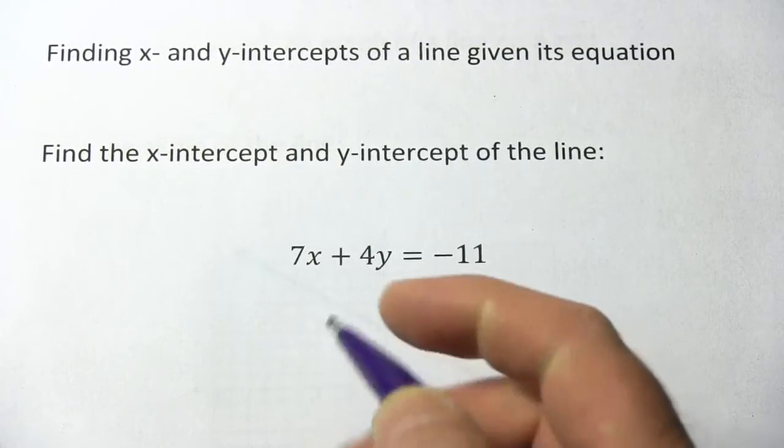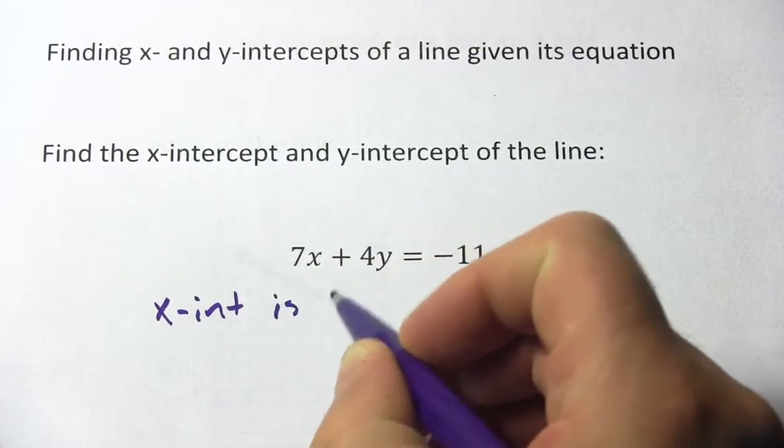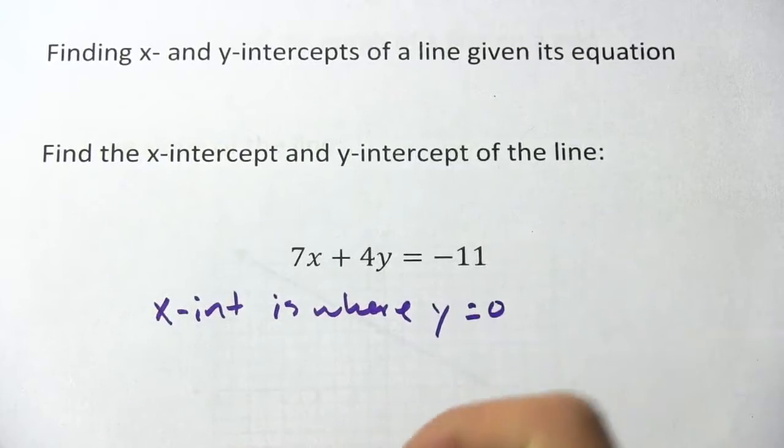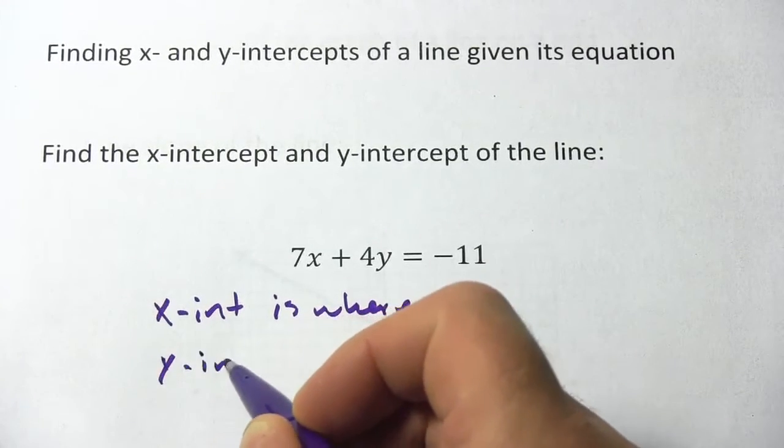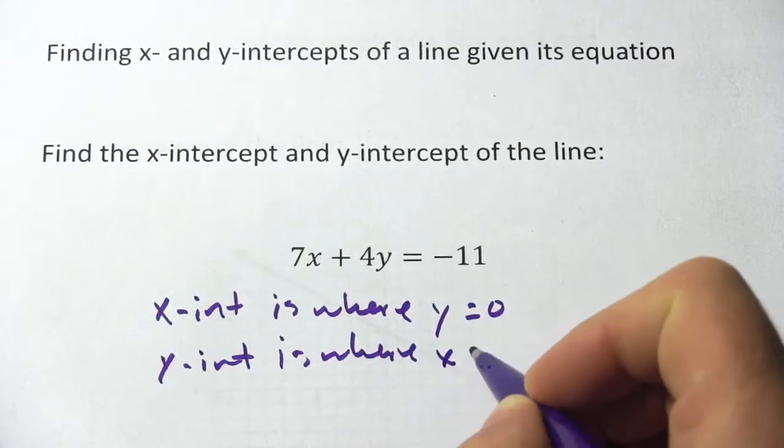So I think the easiest way to approach this is to know that the x-intercept is where y equals 0 and the y-intercept is where x equals 0.